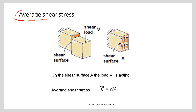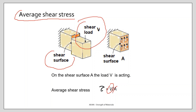Similarly, for shear stress — if you have stresses acting in the plane, you have a shear surface and a shear load. Taking the shear load V divided by the area gives the average shear stress, and on the shear surface we assume a uniform shear stress distribution.